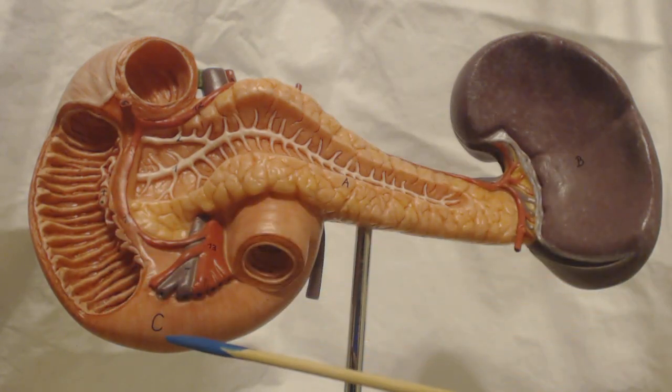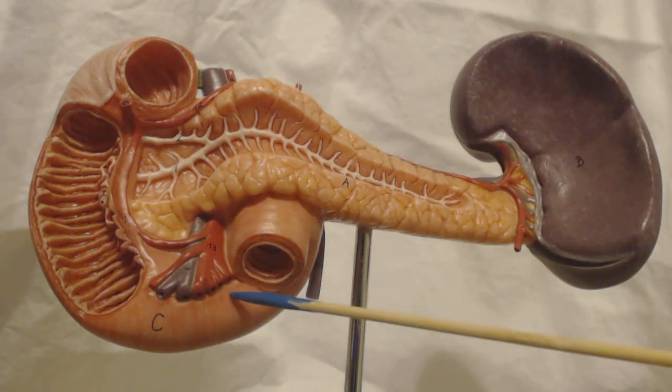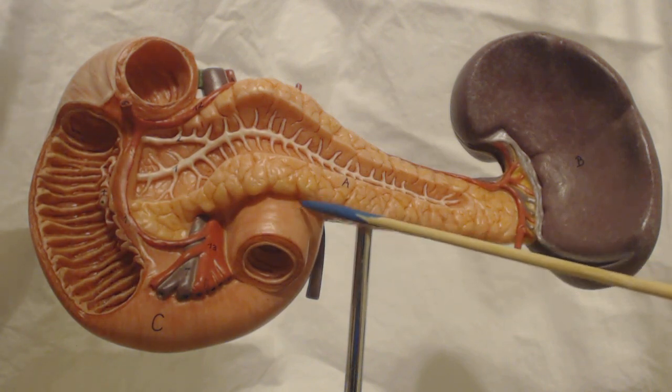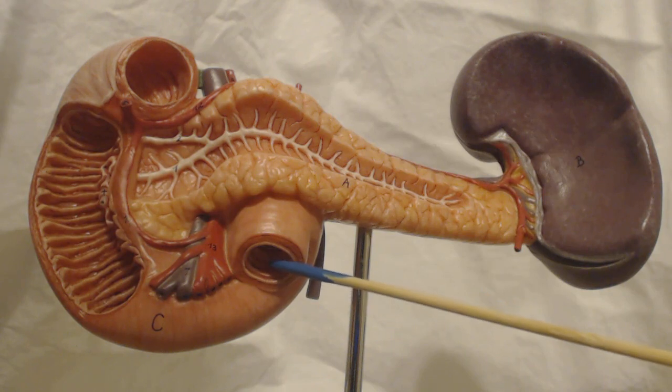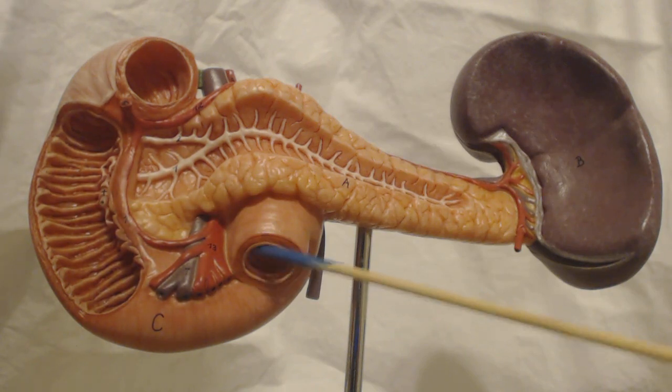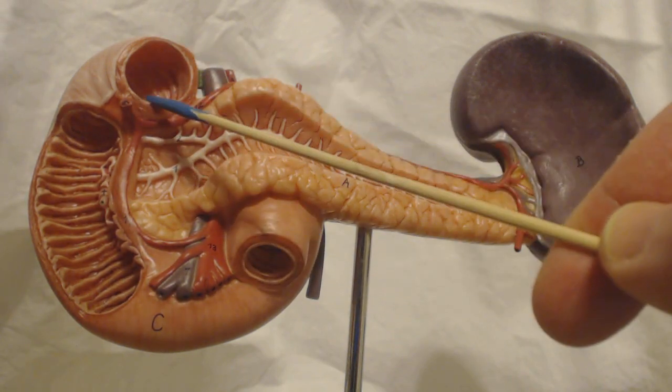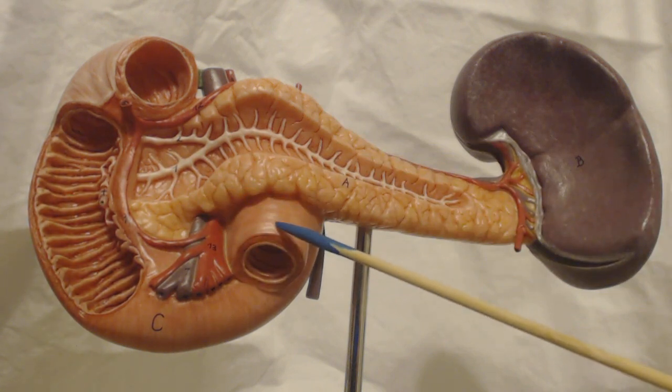The duodenum continues down this way in a curve, otherwise known as a flexure, and then continues up as what's called the ascending duodenum and then continues on here to the jejunum. So this is the beginning of the duodenum. This is the end of it. From here on, it continues in the small intestine as the jejunum.